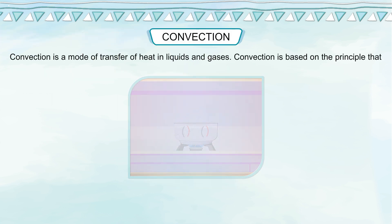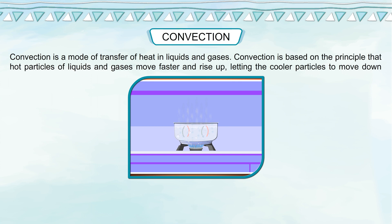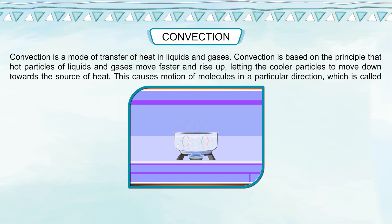Convection: Convection is a mode of transfer of heat in liquids and gases. It is based on the principle that hot particles of liquids and gases move faster and rise up, letting the cooler particles move down towards the source of heat. This causes motion of molecules in a particular direction, which is called a convection current.